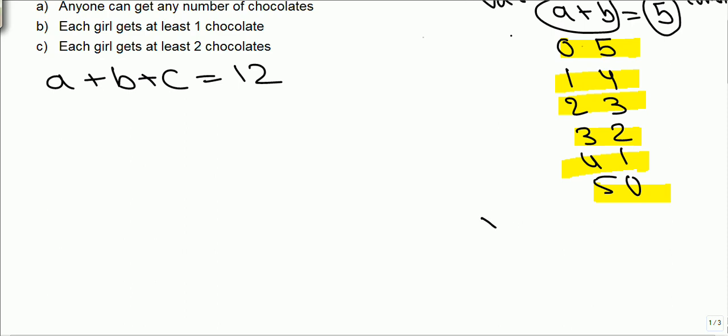2 variables, 5 constant. The standard answer for these kind of questions is number of variables plus constant minus 1, select variable minus 1.